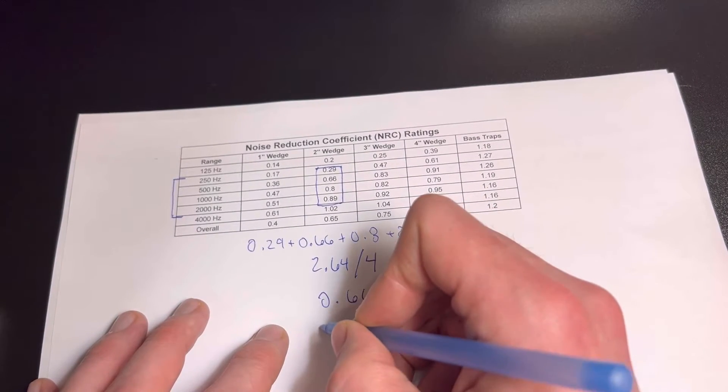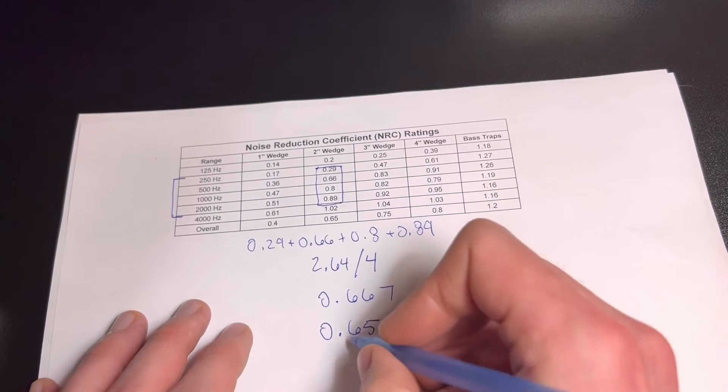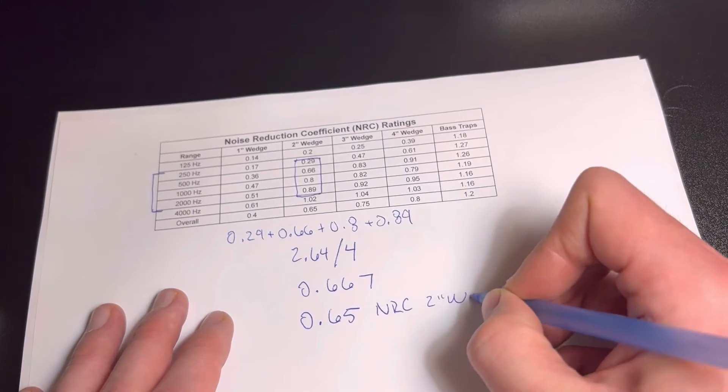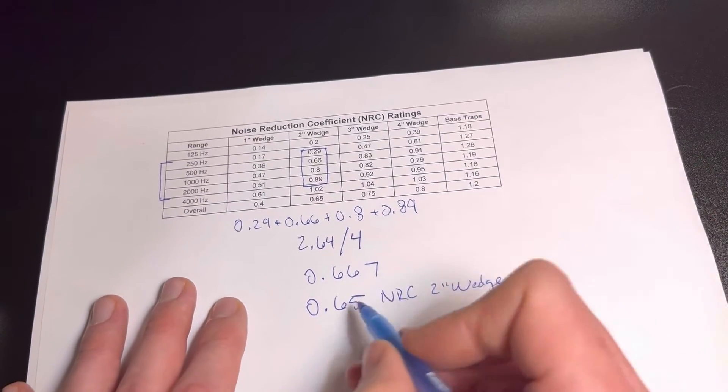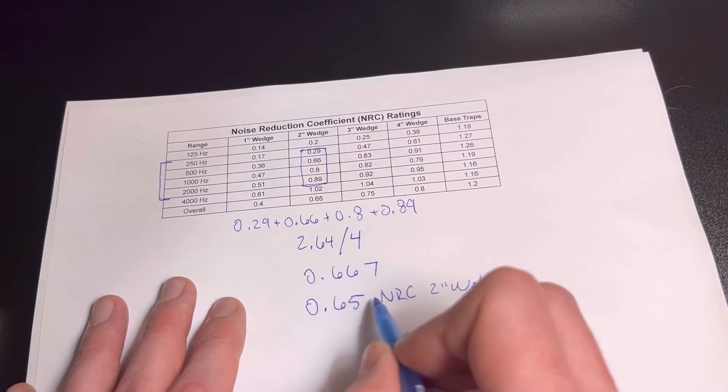We're going to round this to 0.65, which is going to be the NRC for two inch wedge. And note that this number right here is going to be either a 0 or a 5.